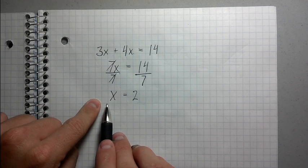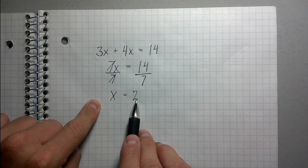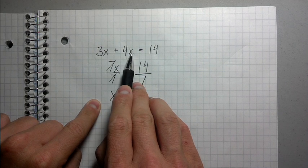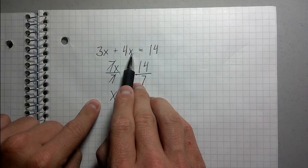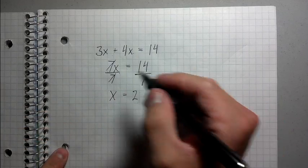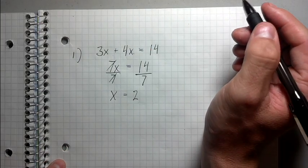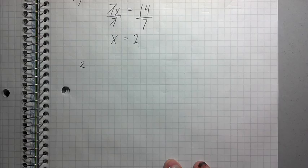That makes sense, right? I can check this equation by substituting 2 back in for x. 3 times 2 is 6, plus 4 times 2 is 8. 6 plus 8 equals 14. It works. Perfect. That was the first example. I'm going to give another example now. What if we had an equation that looks something like this?